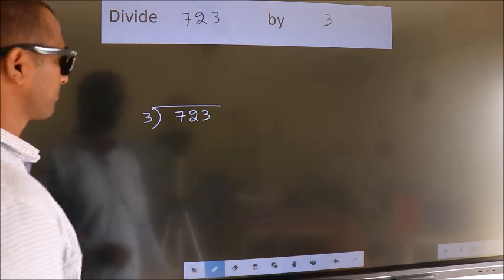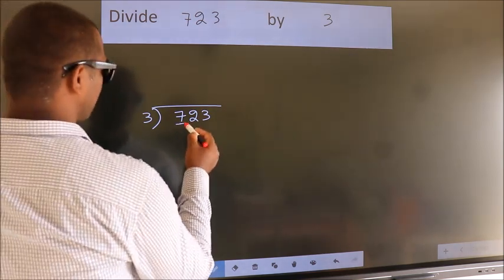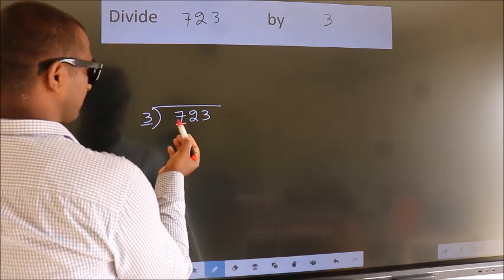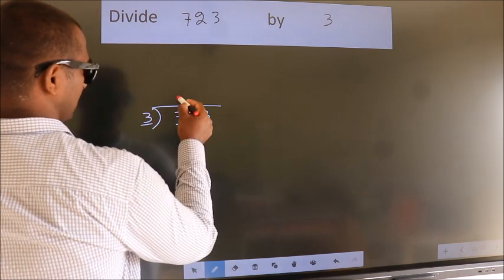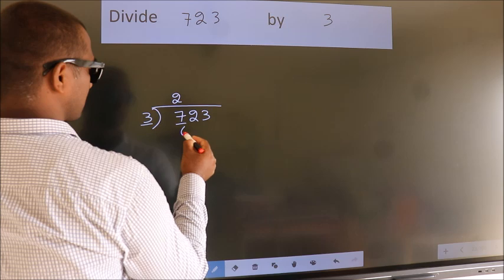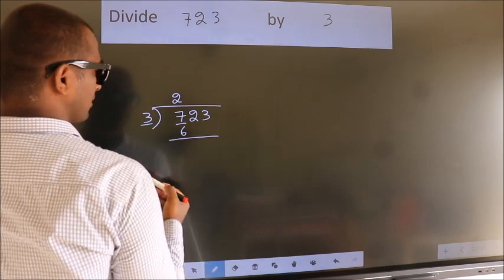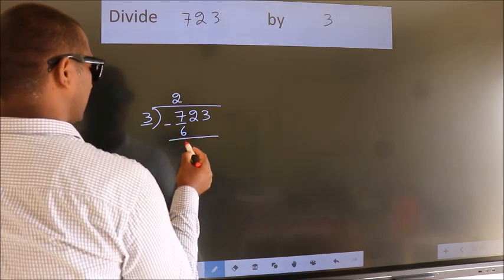Next. Here we have 7. Here 3. A number close to 7 in 3 table is 3 twos, 6. Now, we should subtract. We get 1.